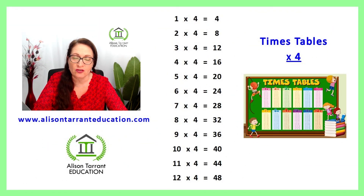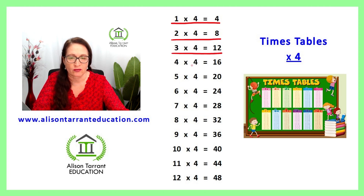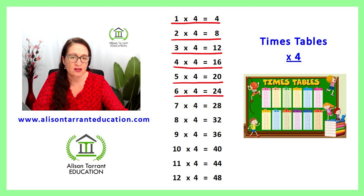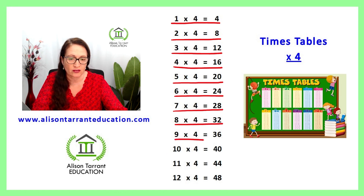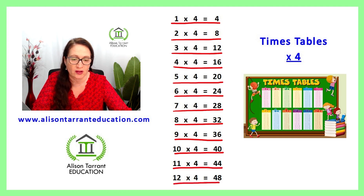We will now learn the 4 Times Tables. 1 times 4 is 4, 2 times 4 is 8, 3 times 4 is 12, 4 times 4 is 16, 5 times 4 is 20, 6 times 4 is 24, 7 times 4 is 28, 8 times 4 is 32, 9 times 4 is 36, 10 times 4 is 40, 11 times 4 is 44, 12 times 4 is 48.